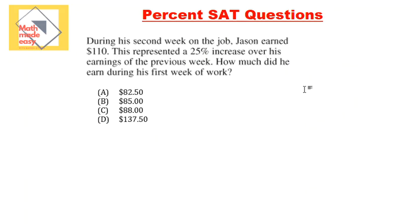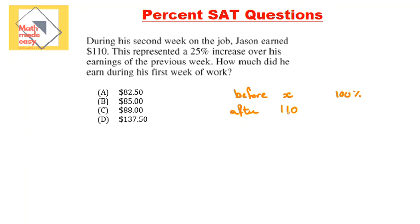Now let's look at another question. During his second week on a job, Jason earned $110. This represents a 25% increase over his earnings from the previous week. How much did he earn during his first week? Using cross multiplication, we identify the $110 as after the change. Before the change is X, which represents 100%. After the 25% increase, 110 corresponds to 125%.